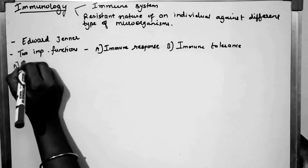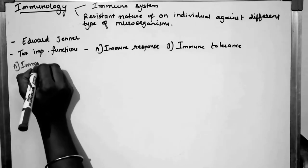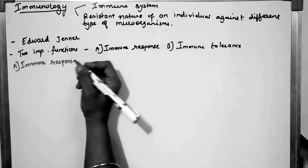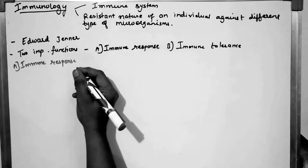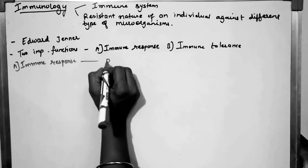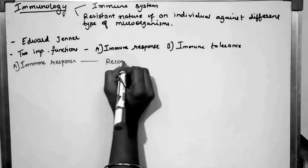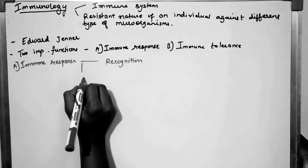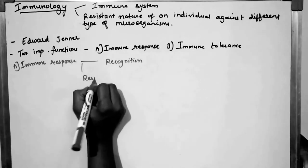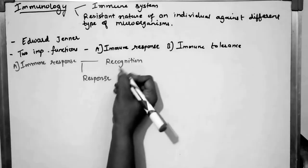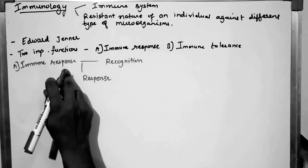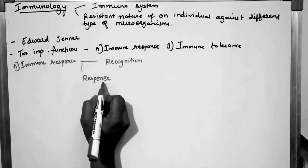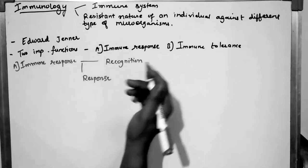First we will see immune response — how our body responds to microorganisms. The first step is recognition, and the second is response. Our immune system first recognizes whether something is a self-cell or a non-self-cell, and then it responds to that particular microorganism.